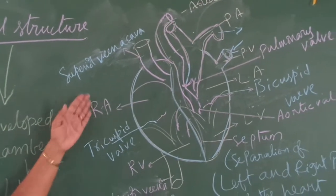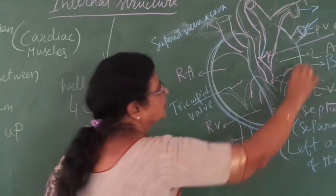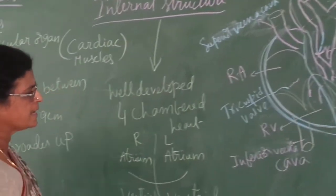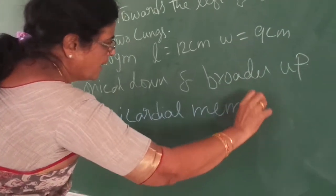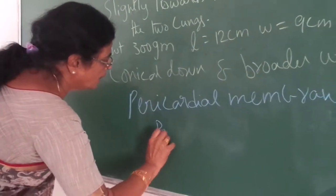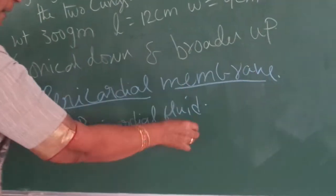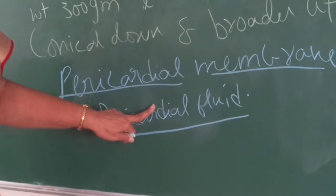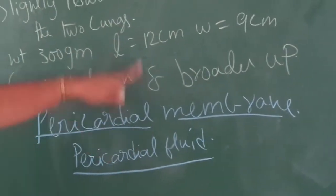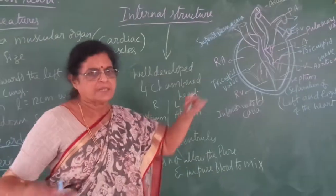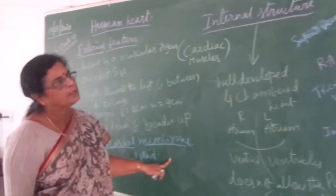The heart is covered with a double membrane called the pericardial membrane. It is a double membrane, and between the two layers there is a fluid called pericardial fluid. The pericardial membrane, the pericardial fluid, the ribcage, and the vertebral column all protect the heart from external injuries and shocks. The heart is located in the chest region between the two lungs. The ribcage protects from the sides and the vertebral column protects from the back.